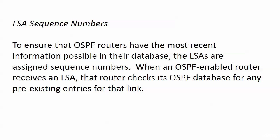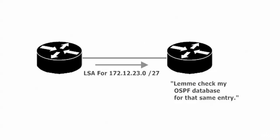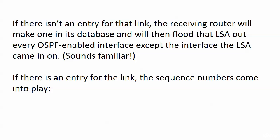As I mentioned at the end of the previous video, we've got to make sure that any information coming to our router is the latest and greatest before we overwrite the information we already have. With OSPF, that's all about the LSA sequence number. When an OSPF-enabled router receives an LSA, it first checks the OSPF database for any pre-existing entries for that link. If there is no entry for that link, the receiving router will add one to its database and flood that LSA out every OSPF-enabled interface except the interface the LSA came in on.